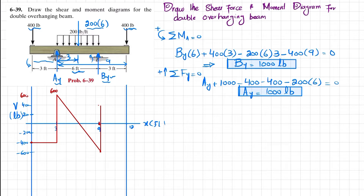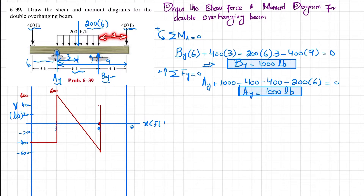We draw a vertical line at point B. Moving from point B to the end there is no other force, so the shear force remains at 400. At the very end we have the minus 400 load, so it drops to zero. This completes the shear force diagram.